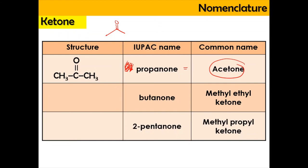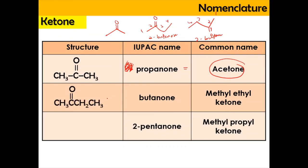For butanone, it consists of four carbons — 1, 2, 3, 4 — and we place the C double bond O to get 2-butanone. The numbering can go either direction and both are 2-butanone, so both are correct. The common name is methyl ethyl ketone.